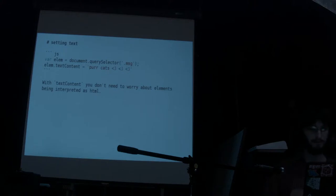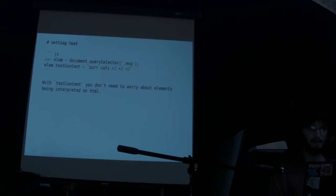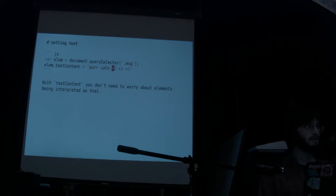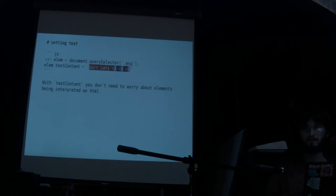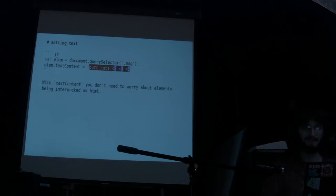How do we set some text? Once we have a reference, which you can get with document.querySelector, you can just do .textContent equals the string. The nice thing about setting textContent is that you can have characters in it — like less-thans and greater-thans — and those will not be interpreted as HTML; they'll be interpreted as literals. So if you get some input from a form and want to display it with JavaScript, this is a good thing to use, because you don't have to worry about somebody putting in a script tag into your box.